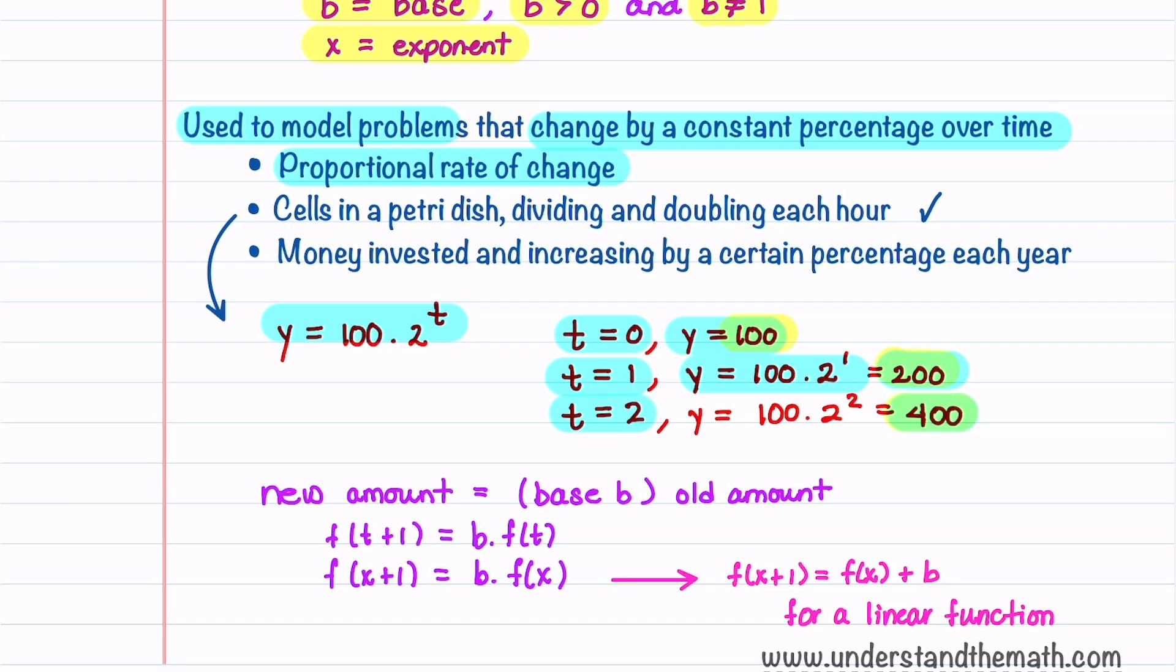Another common example of using an exponential model is money that is invested and increases by a certain percentage each year. One way to recognize if a problem can be modeled by an exponential function is to look to see if the new amount equals a number or base b times the old amount. Just like with our cells in a petri dish, the new amount was 2 times the old amount. We write this mathematically as f of t plus 1 equals b times f of t, or f of x plus 1 equals b times f of x. This is in contrast to a linear function where the new amount equals the old amount plus a number.